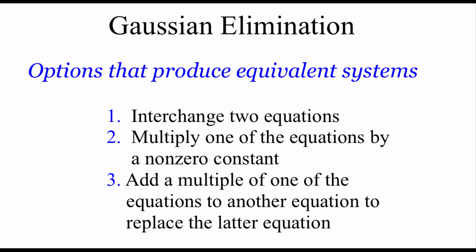Now our systems aren't going to start in row echelon form, so we're going to use something called Gaussian elimination to get our system in that form. We have a few options: first, we can exchange two equations to rearrange their order. Option two, we can multiply one of our equations by some non-zero constant. Option three, we can add a multiple of one equation to another equation to replace it in the system.